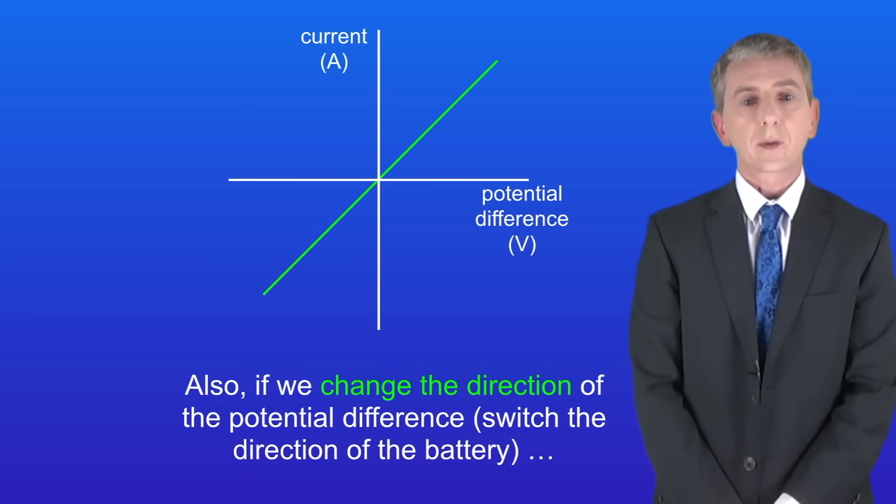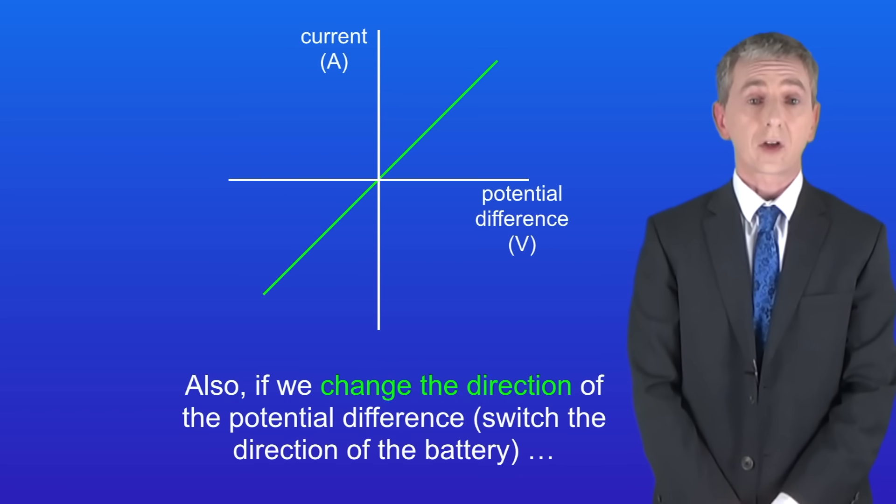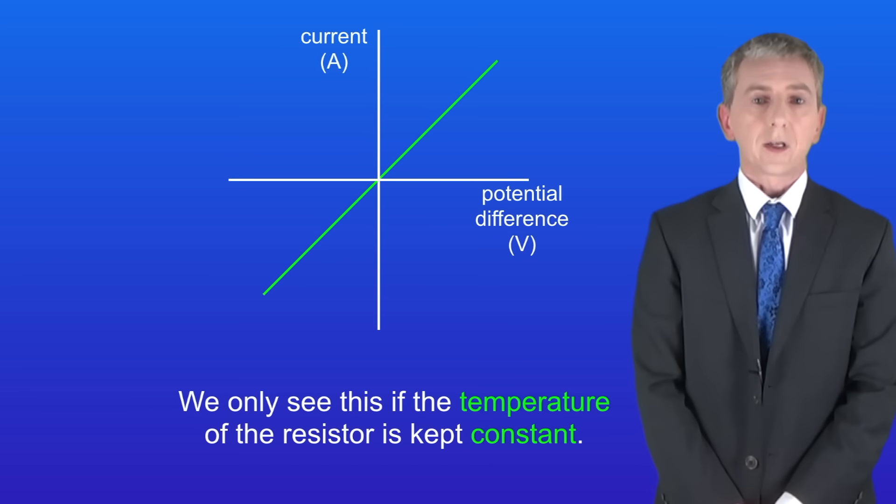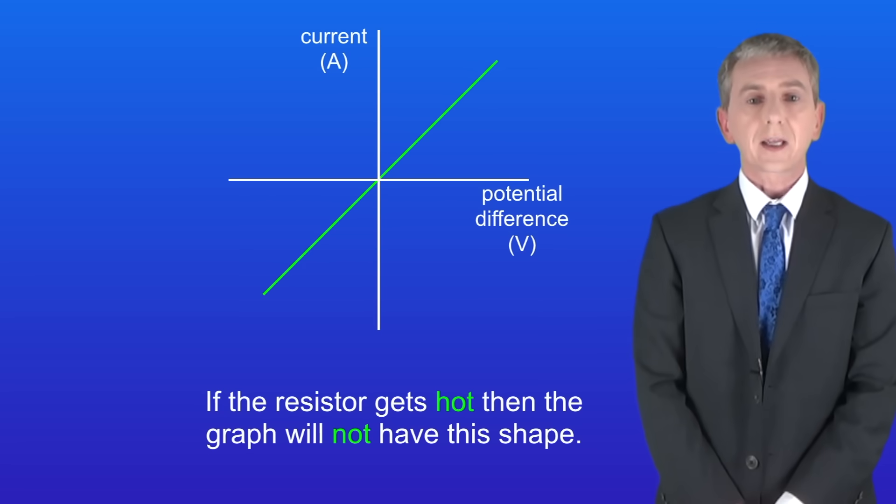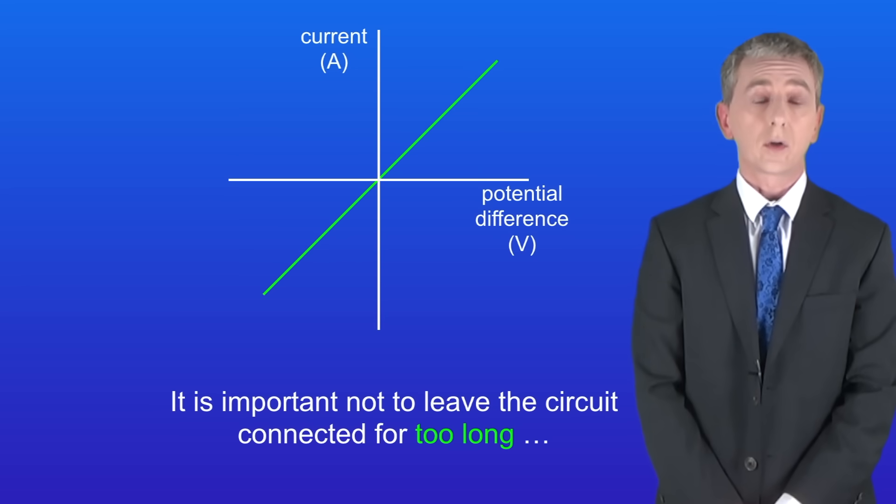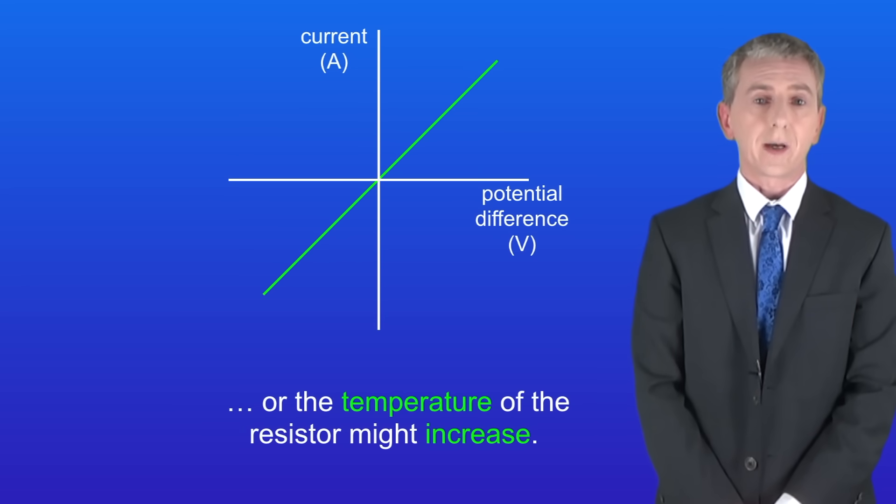Also, if we change the direction of the potential difference, in other words switch the direction of the battery, then we still get a straight line passing through zero. Now I should point out that we only see this if the temperature of the resistor is kept constant. If the resistor gets hot then the graph will not have this shape. So it's important not to leave this circuit connected for too long or the temperature of the resistor might increase.